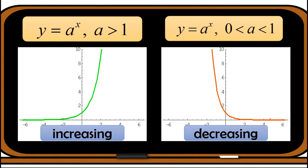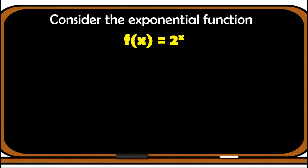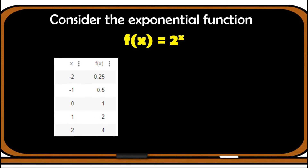To further understand this, let us consider the exponential function f(x) = 2^x. Let us analyze the table of values and the graph of this function. Looking at the table, we use x values of −2, −1, 0, 1, and 2. To find the values of f(x) we do direct substitution — for example, when x = −2, we have 2^(−2) = 0.25. The other values of f(x) are 0.5, 1, 2, and 4.